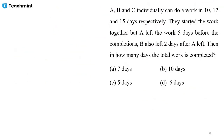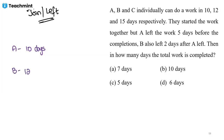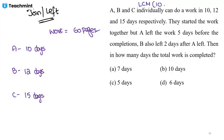One more question on the join or left concept, where joining also happens. A, B, and C individually can do a work in 10, 12, and 15 days respectively. Take LCM of 10, 12, 15 which is 60 as the total work value. Any value is fine, but LCM makes calculations easier.